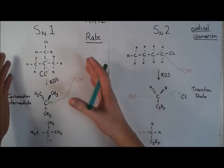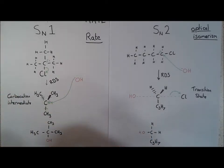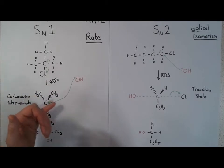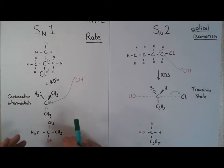First of all, if you look at SN1, if you start with a pure enantiomer, so one version of the optical isomer, you end up with a carbocation intermediate, which means that you end up with 50% of each enantiomer, even if you start with an optically pure version.